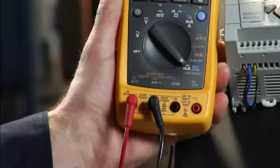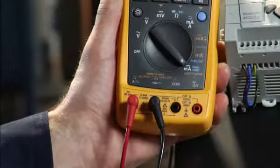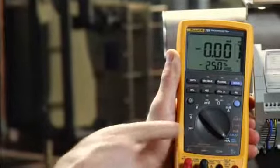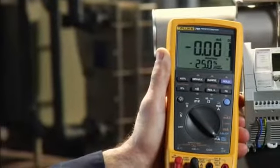The 789 also has a 24 volt loop power supply that will power a transmitter. You can simultaneously measure the milliamp signal drawn against the loop power supply.